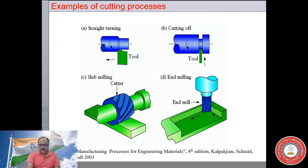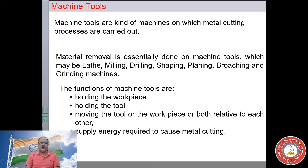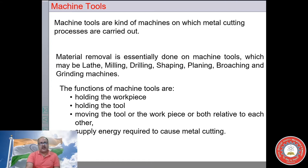Metal cutting operations are done on machines called machine tools. Several machine tools include the lathe machine, drilling machine, shaping machine, milling machine, planning machine, broaching machine, and grinding machine — though this list is not complete. The functions of a machine tool are essentially to hold the workpiece, hold the cutting tool, move the cutting tool and the workpiece relative to each other, and supply the energy — that is the power — required for metal cutting. With this definition of machine tool, we move on to the theory of metal cutting.